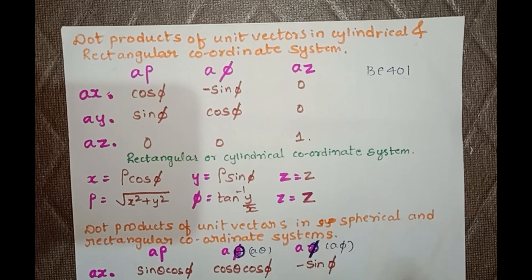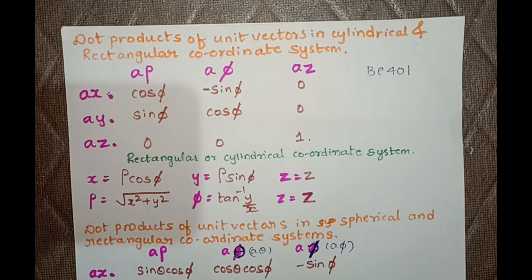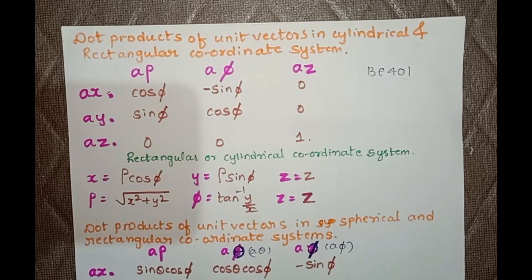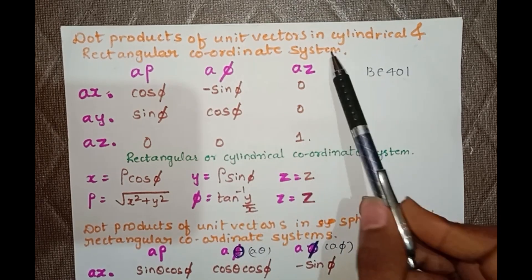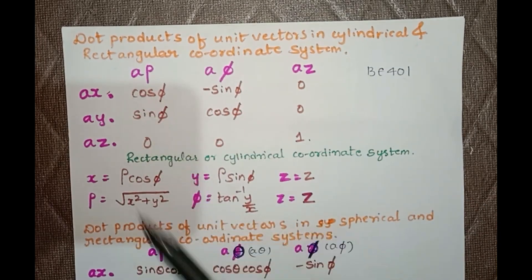So you can expect the conversion of Cartesian coordinate system into cylindrical system, or conversion of cylindrical system to rectangular system, or Cartesian system to spherical system, or spherical system to Cartesian system. If you want to solve those questions, you must know this table — it is crucial to solve those questions. We are going to deal with the cylindrical and rectangular coordinate system.